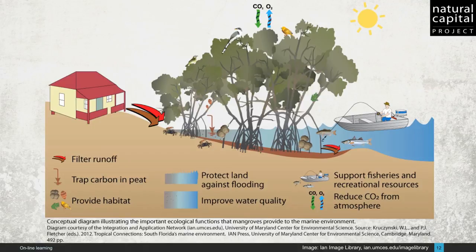To give you a sense of the range of services that can be provided by one habitat, take the case of mangroves. Some services they provide include climate and water regulation services, protection from storms, and support for fisheries and recreation through the provision of habitat for key species.